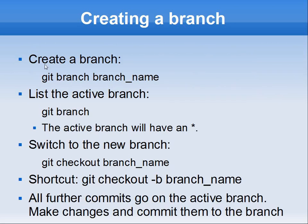To create a branch you say 'git branch' followed by the branch name. It creates a new branch in your graph but doesn't switch to it — you're still on master and any commits would still go to master. You have to manually switch to the new branch with the checkout command: 'git checkout branch-name'. Now you're on this new branch and any changes go along this new trajectory. There is a shortcut to do both at once: 'git checkout -b branch-name'.